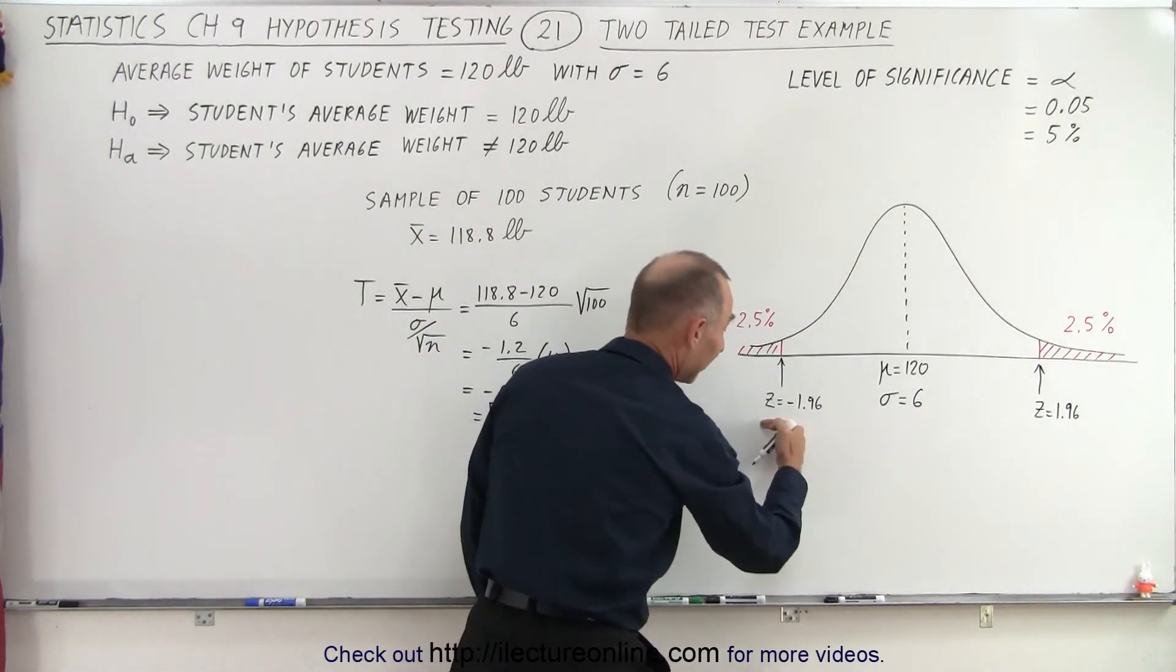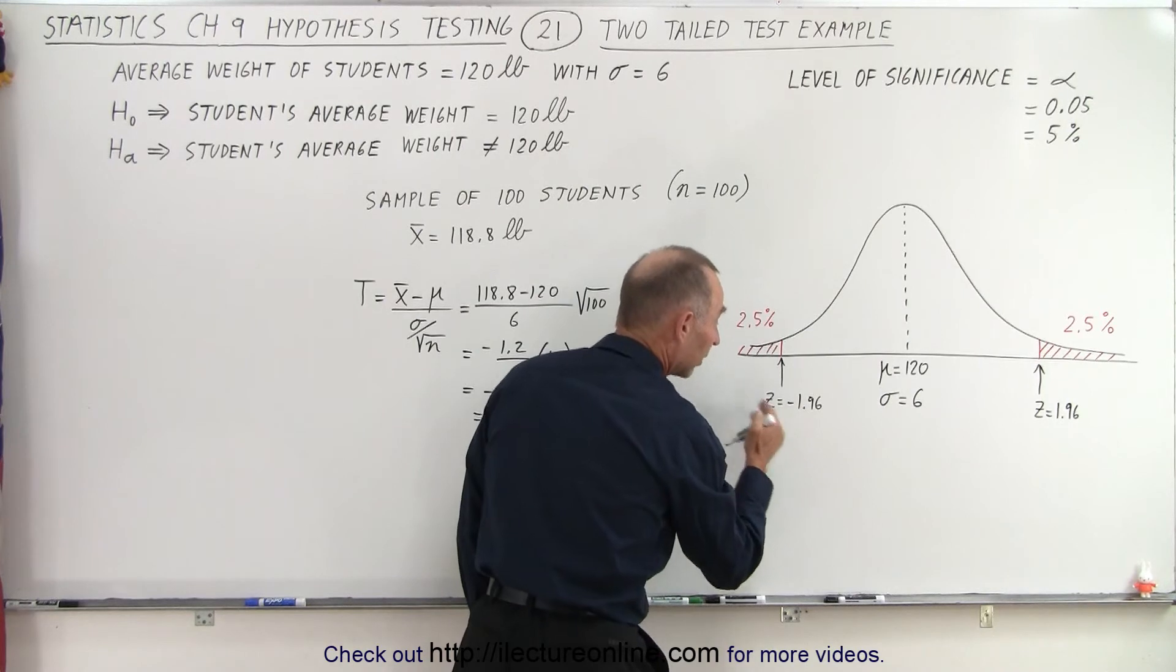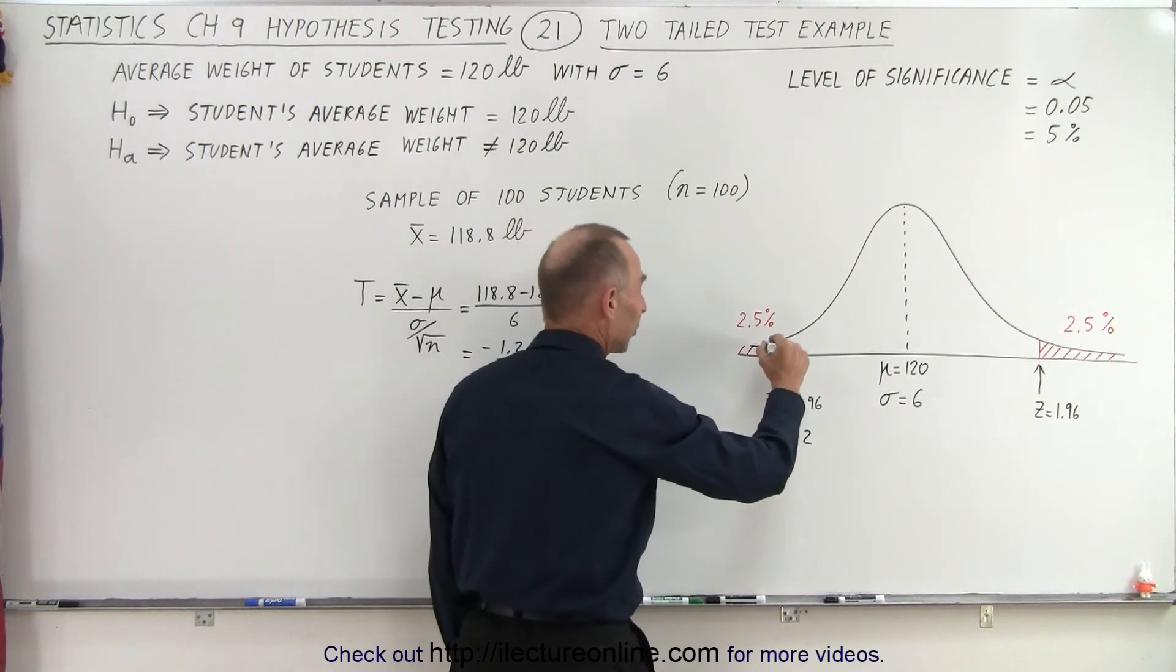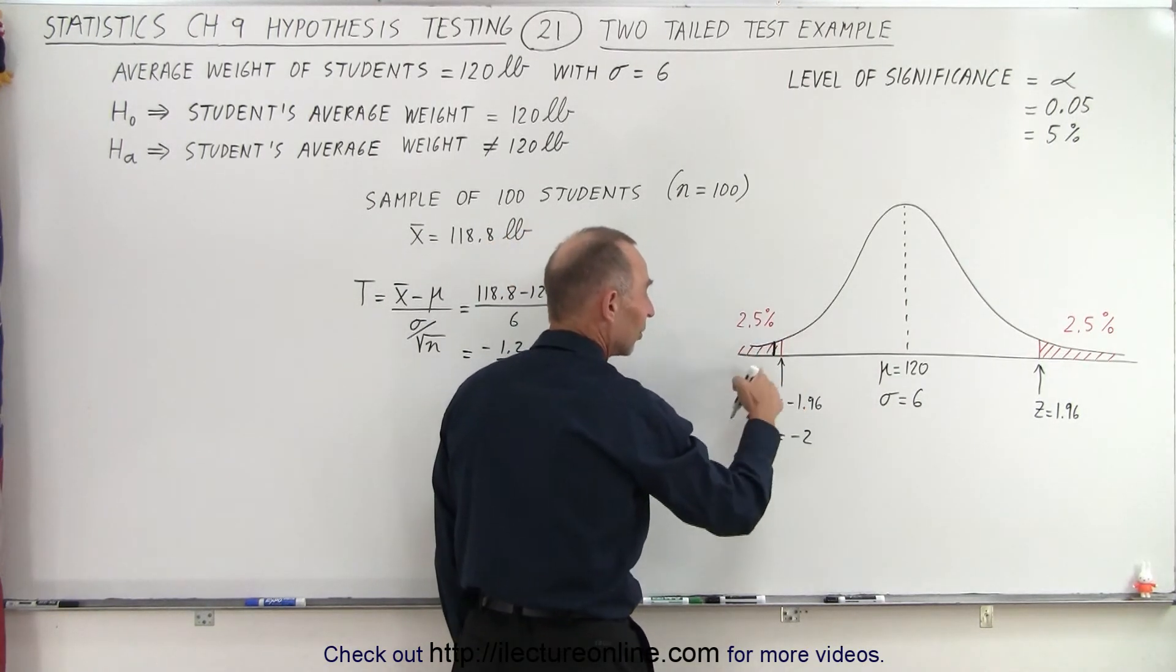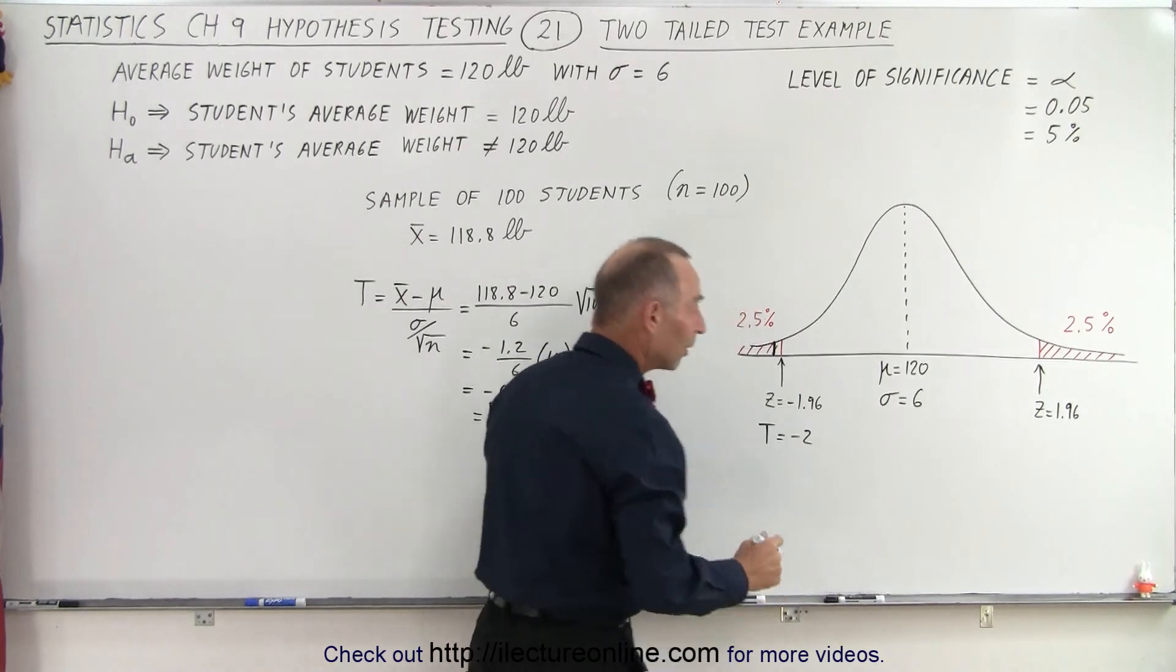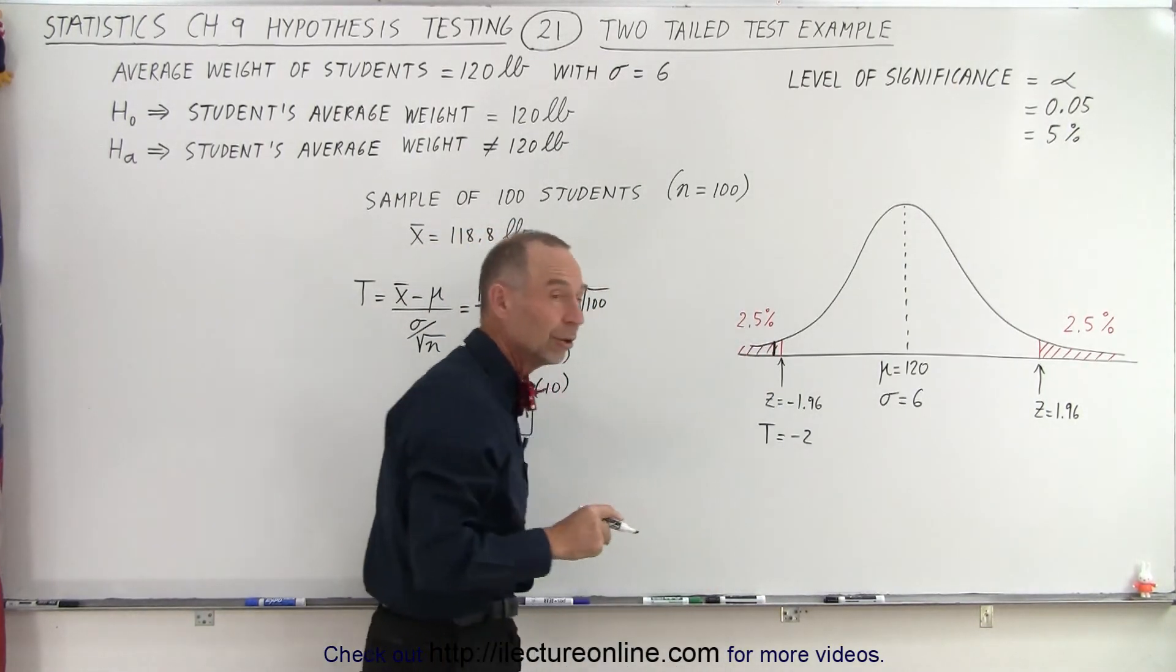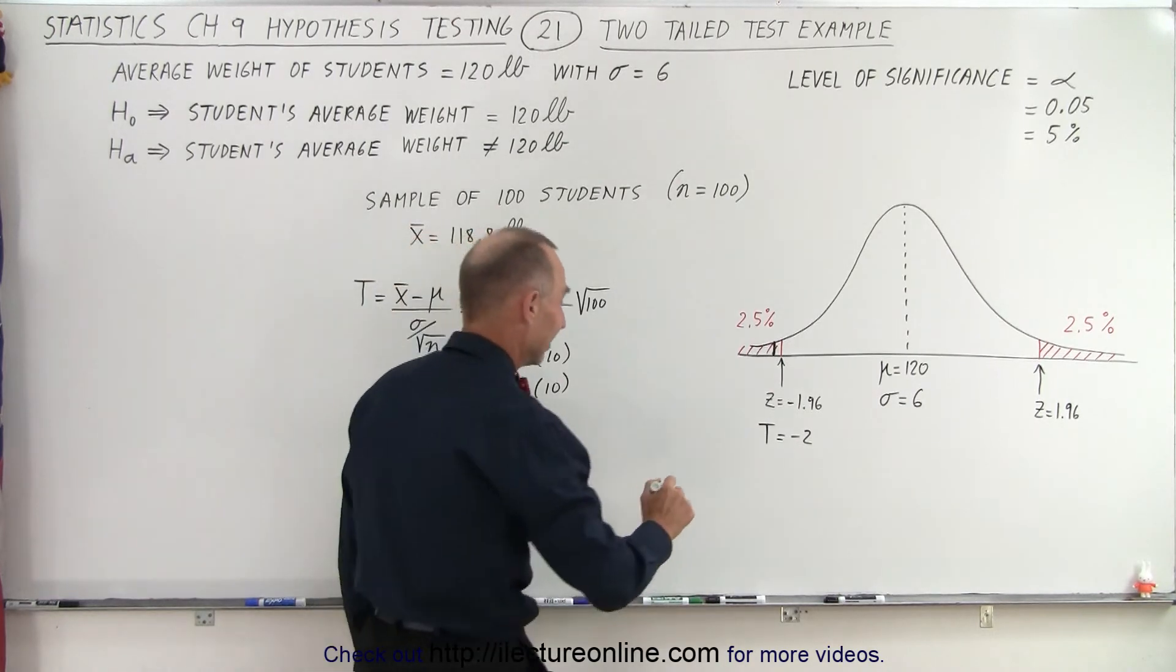Notice it's further to the left than the z-score on the left side. So since t is equal to negative 2, which is further to the left, that puts t into the critical region, to the left of the boundary, which is at minus 1.96. And so therefore, since we're in the critical region, we are going to reject. Therefore,